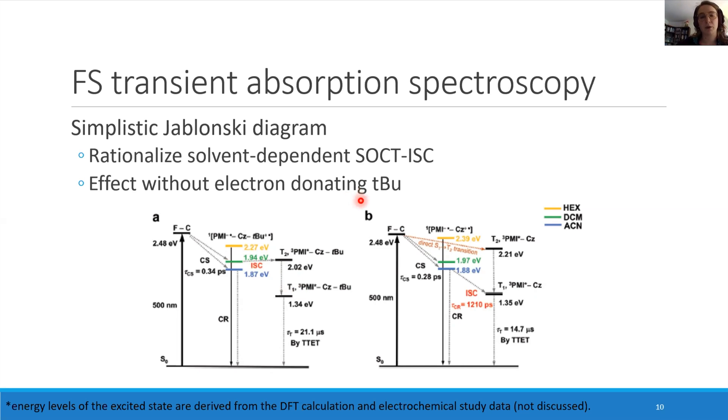However, the situation changed without the electron-donating tert-butyl group. The charge transfer state increased a bit because it's less stabilized, and the T2 state increased significantly, which makes it impossible for intersystem crossing to occur from the charge transfer state to the T2 state. So it's only possible in highly polar solvents to have intersystem crossing between the charge transfer state to the T1 state.